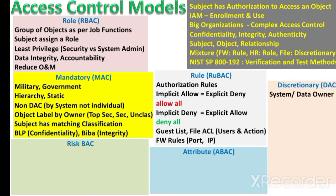Coming to the discretionary access control (DAC) model: here, access or authorization decisions are made by the data owner or the system custodian. They can decide which users can access a specific object such as a file and what actions those users can perform. It is entirely at the discretion of the data owner. For example, folders on a file server use DAC — the owner of the folder can decide which users can access it and what actions they can perform.